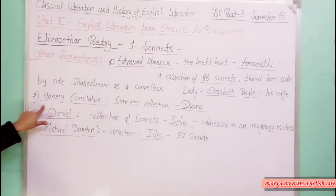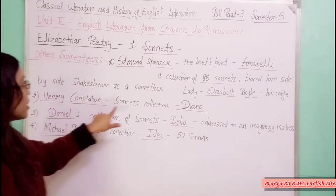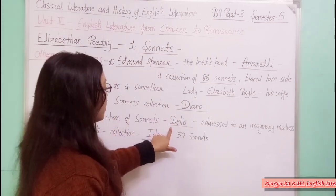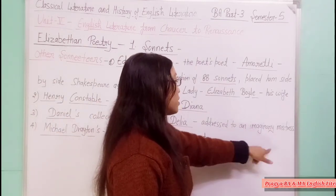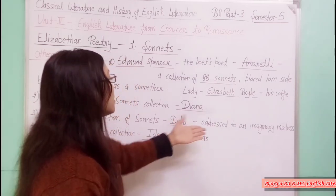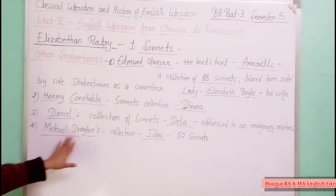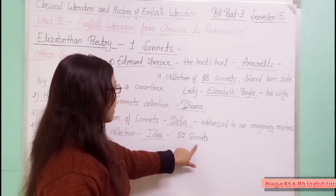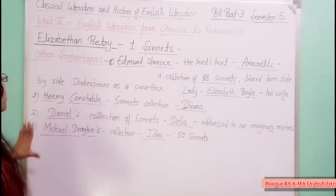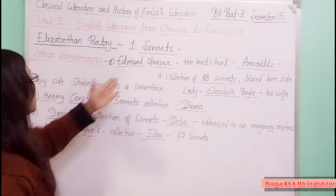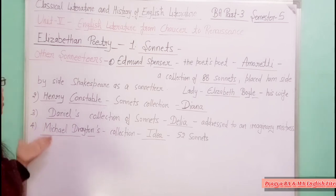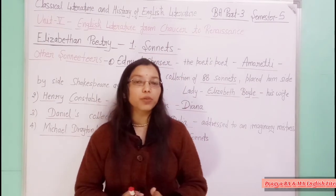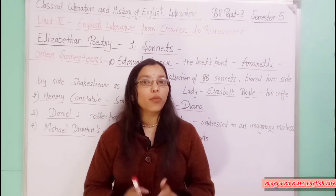Next is Henry Constable, whose sonnet collection is called 'Diana.' After him is Samuel Daniel, whose sonnet collection is known as 'Delia,' addressed to an imaginary mistress whose real identity is not known. Next is Michael Drayton, whose collection is known as 'Idea.' He is also known as one of the notable sonneteers of Elizabethan poetry.